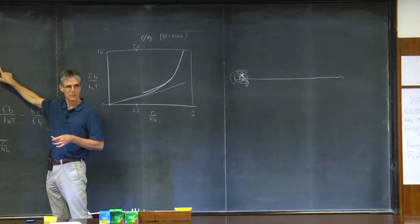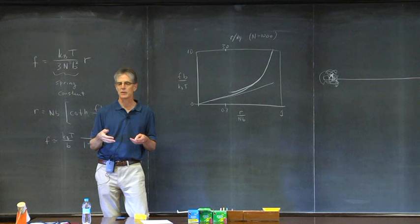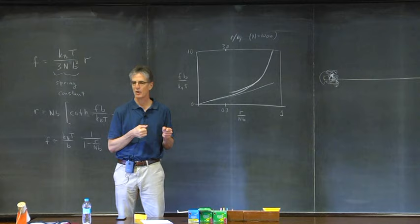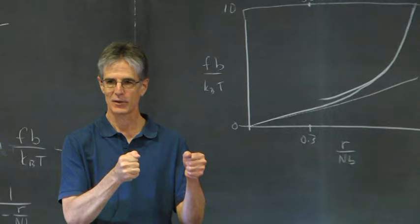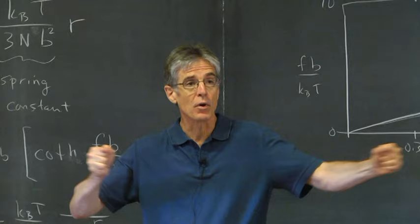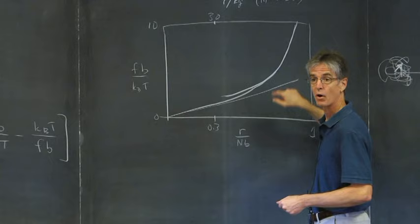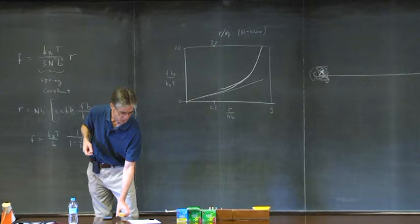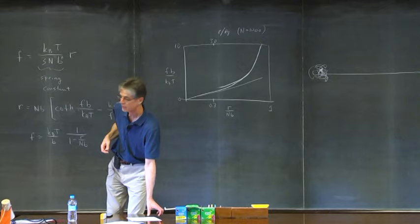You shouldn't regard this as a crummy approximation — it's actually a pretty good approximation that works almost all the time. An example of where it doesn't work is if you have a polymer melt in extensional flow, where you grab something like silly putty and pull it straight apart. Only for very strong extensional flows do you access that nonlinear regime.